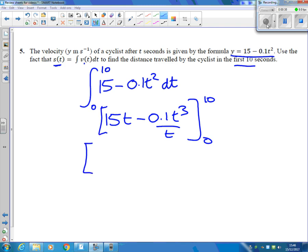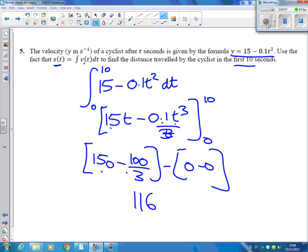Putting in the 10 in there, 10 times that's 150, 10 cubed is 1000, times by a 10th is 100, so 100 over—that should say 3 there—100 over 3. Putting in the 0 gives us just 0, and so we've got 150 take away 100 over 3, that's 116 and 2 thirds meters.